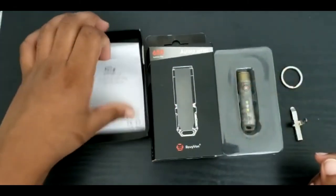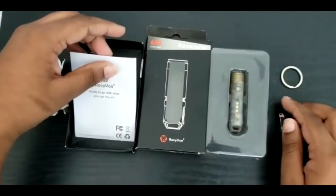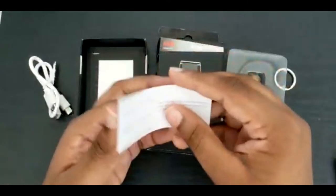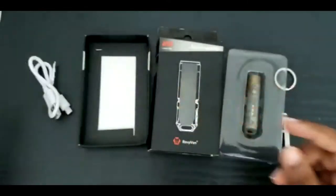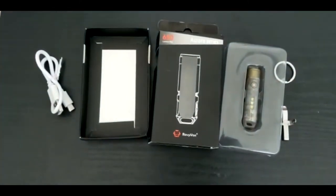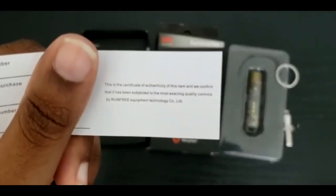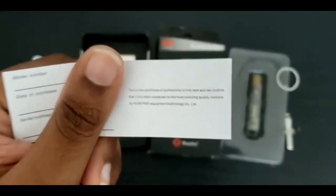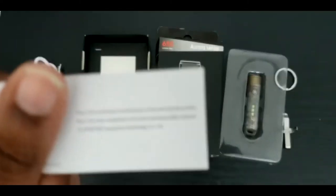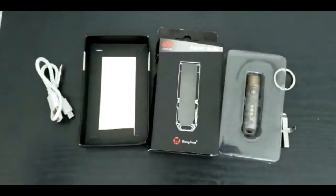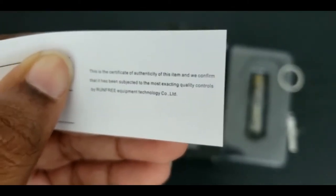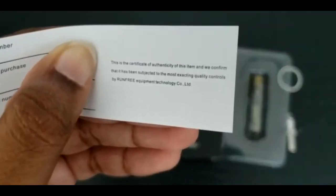This looks like the charging cable. Pretty nice feel. Looks like we have a quick manual and a warranty thing. This is the certificate of authenticity. It shows that it's authentic. This item has been subjected to the most exacting quality controls by Run Freak Equipment Technology Co Ltd. So it's a warranty strip, probably important.